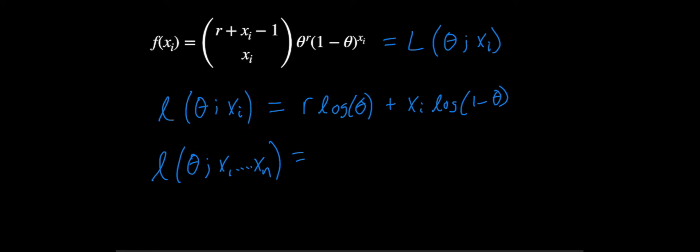All we have to do is to take the sum of n of these here. So we're finding the sum of the log-likelihood of each individual data point. So if we sum this up,